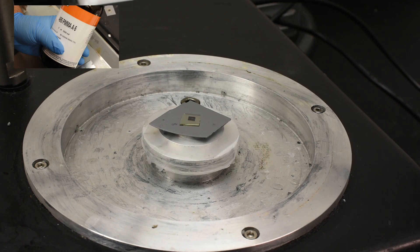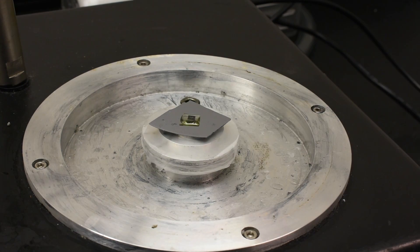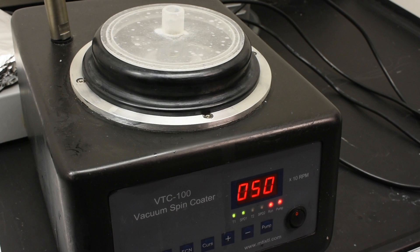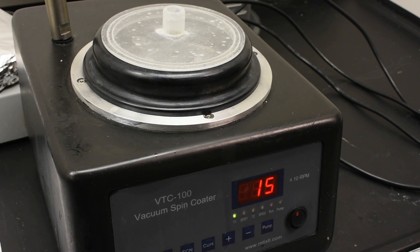The sample is moved to the spin coater, where two drops of 495 PMMA A6 is applied. The sample is then spun at 500 RPM for 15 seconds, followed by 4500 RPM for 45 seconds.